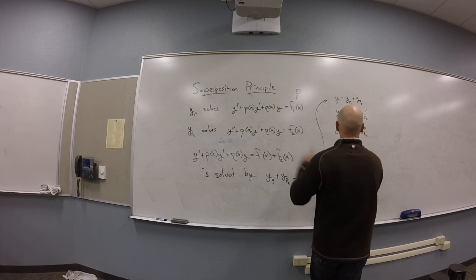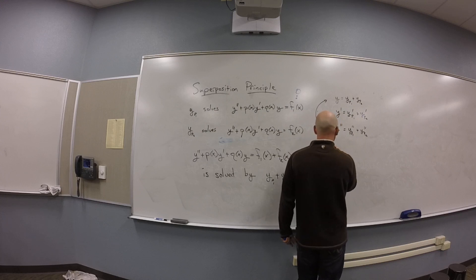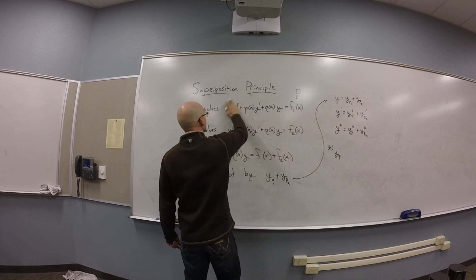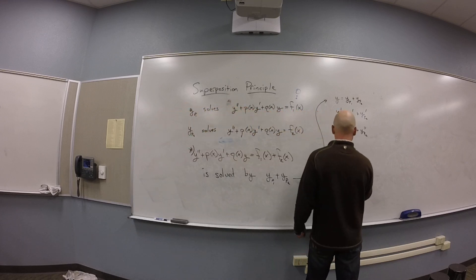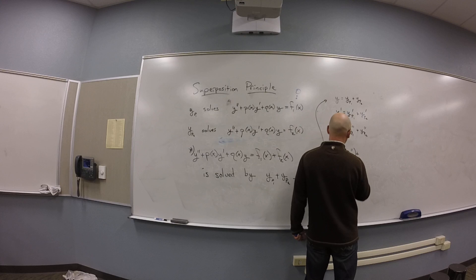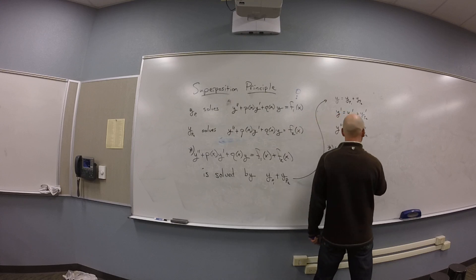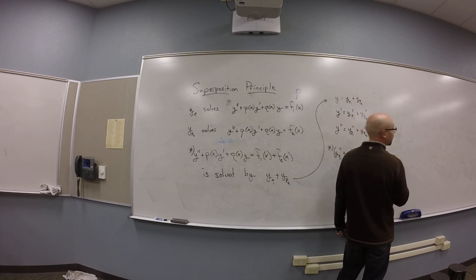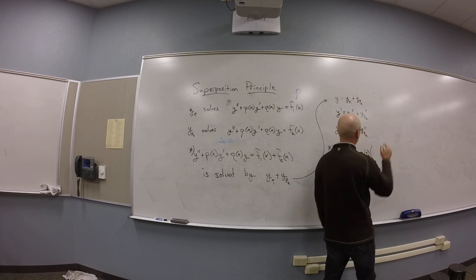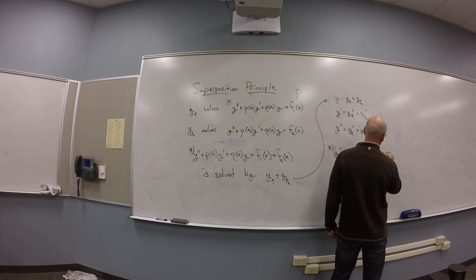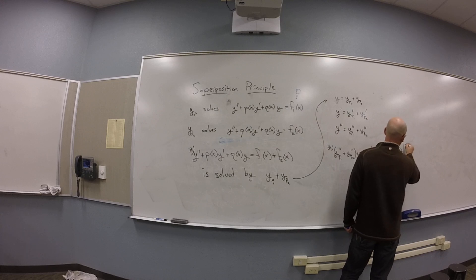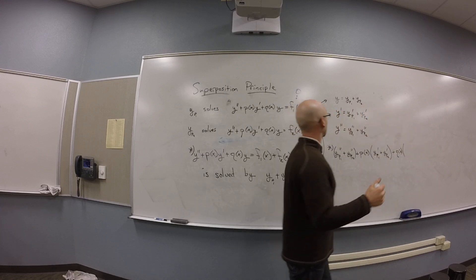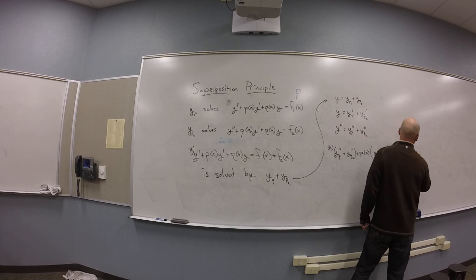You take that and shove it in over there, you get yp1 double prime plus yp2 double prime, right? That's your y double prime, plus p of x times yp1 prime plus yp2 prime, plus q of x times yp1 plus yp2.